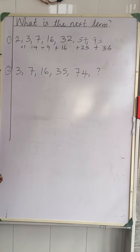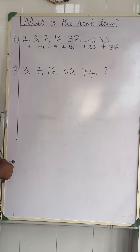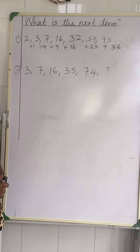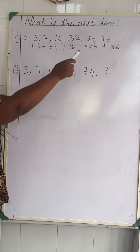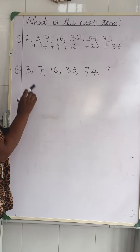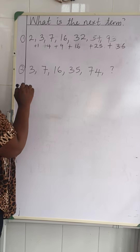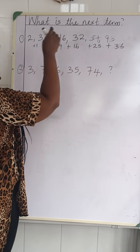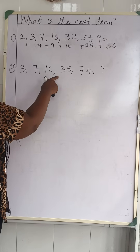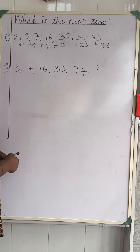Now let's look at number two. What is the next term? We have the sequence: 3, 7, 16, 35, and 74. Let's check whether the difference method we used in number one works here. The difference from 3 to 7 is plus 4; from 7 to 16 is plus 9; but from 16 to 35 gives us 19 — so that method won't work for us. Let's use another method.